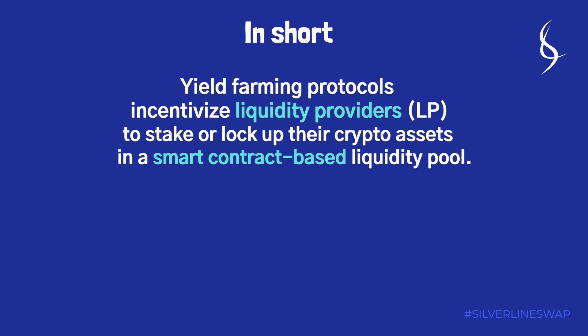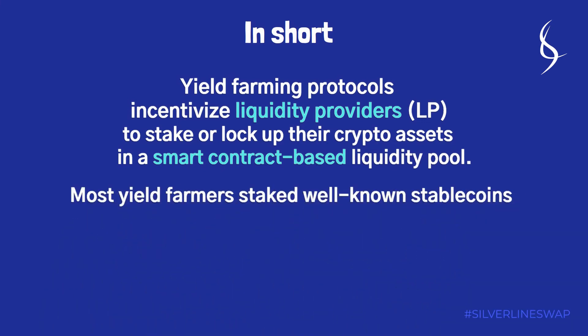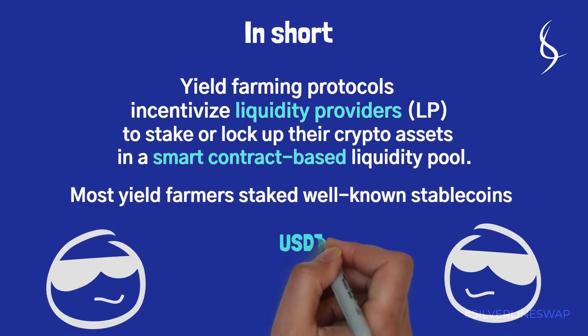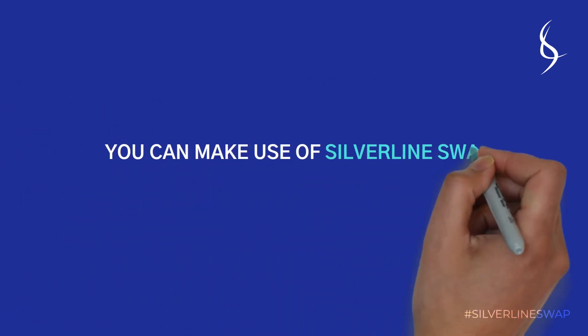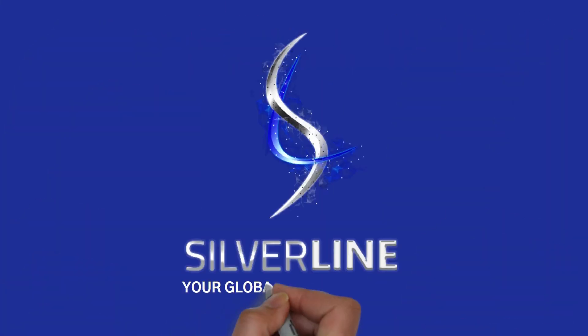Most yield farmers stake well-known stable coins: USDT, DAI, and USDC. You can make use of Silverline Swap to do this on your own. Silverline — your global crypto identity.